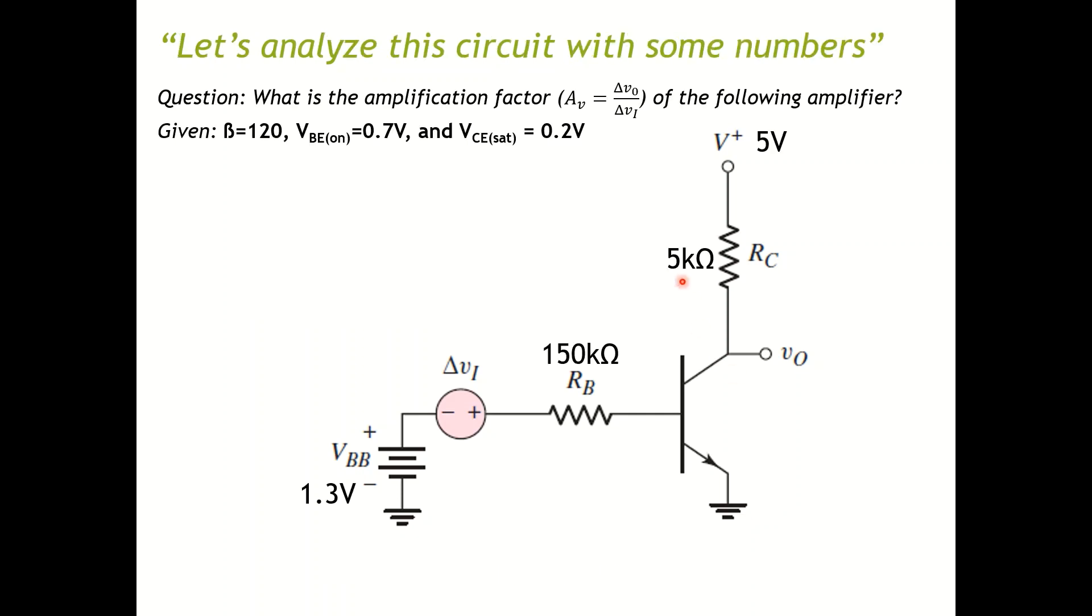In order to understand this, let's try to analyze the circuit. Let's have all the numbers plugged in. Let's assume if we have a BJT, it's going to have a beta of 120. VBE on, of course 0.7. Let's assume VCE sat to be 0.2. What I want you to do is find what is the amplification factor. If I amplify the signal, what is the amplification factor of the varying signal? How can you compare it to VI?